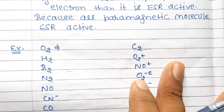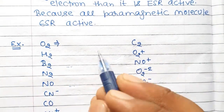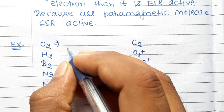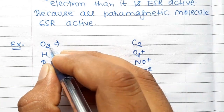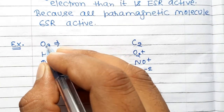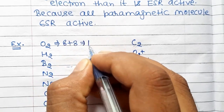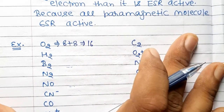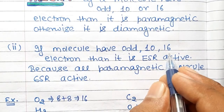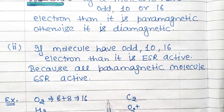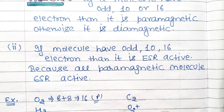Here are some examples I am going to solve with the help of this trick. For O2: oxygen has atomic number 8 and there are 2 oxygen atoms, so the total number of electrons is 16. Since the molecule has 16 electrons, it is paramagnetic in nature.